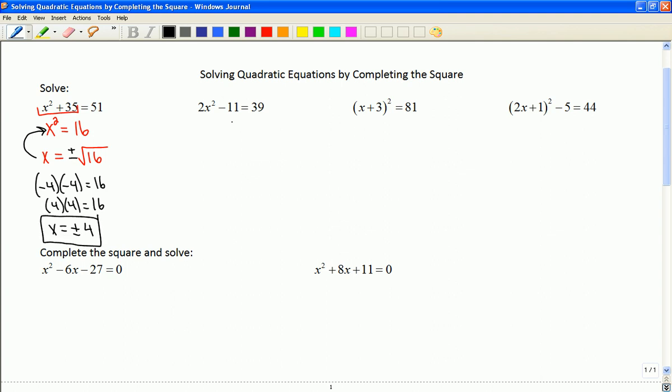So same technique, I have to isolate the x squared, and it's going to be 2x squared equals 50, so x squared is equal to 25. Now that it's isolated, I can take the square root of both sides, and x will be plus or minus root 25, so x is plus or minus 5.